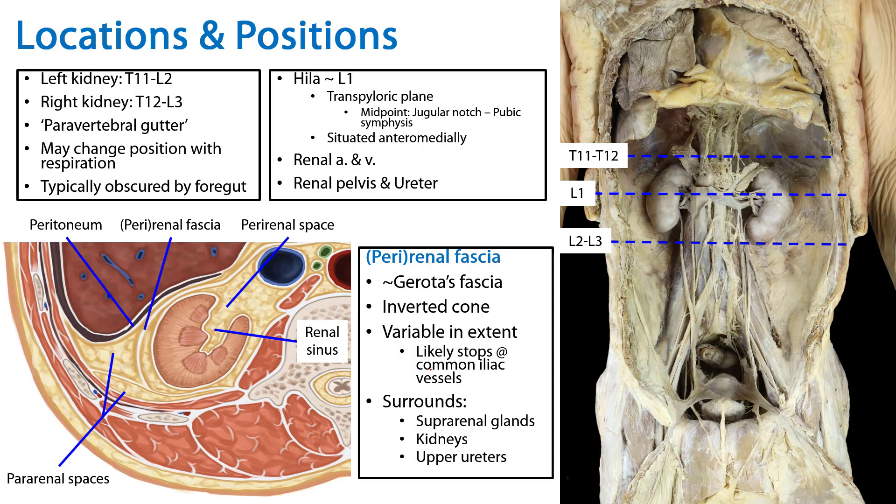In summary, we've discussed the superficial features of the kidney — the borders, poles, and hila — and their relative relationships to various vertebral levels. We've also discussed the spaces surrounding the kidneys: the anterior and posterior pararenal spaces superficial to the perirenal fascia, and the perirenal space deep to the perirenal fascia. Thank you for your time.